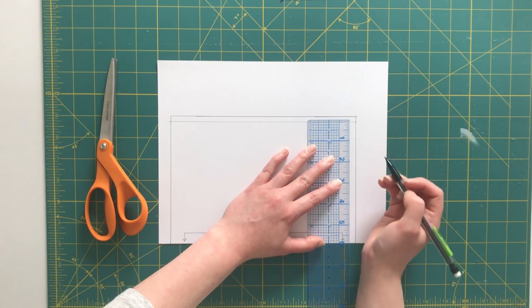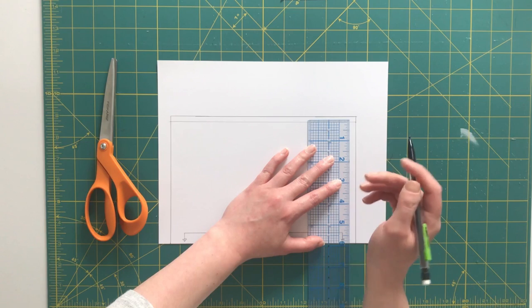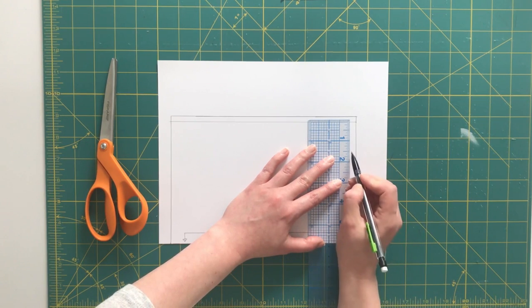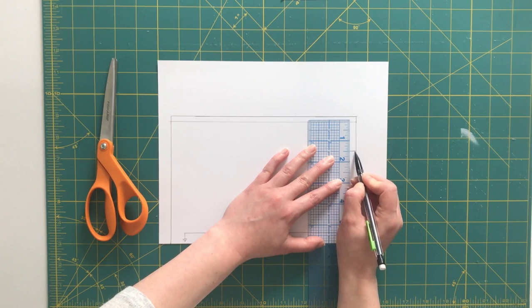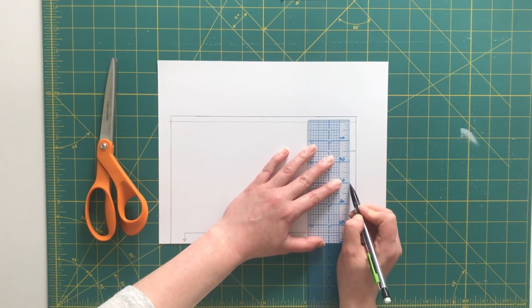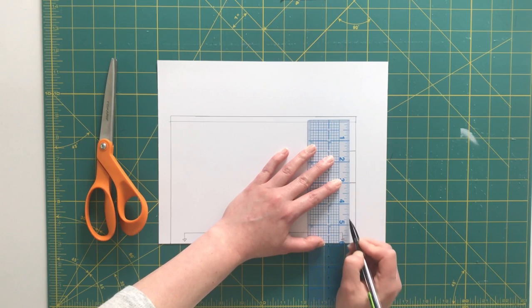So now I'm going to mark the center points of my pleats so this is the point that is folded outward. I'm going to mark at one and a half inches, then again at three inches, and again at four and a half inches.